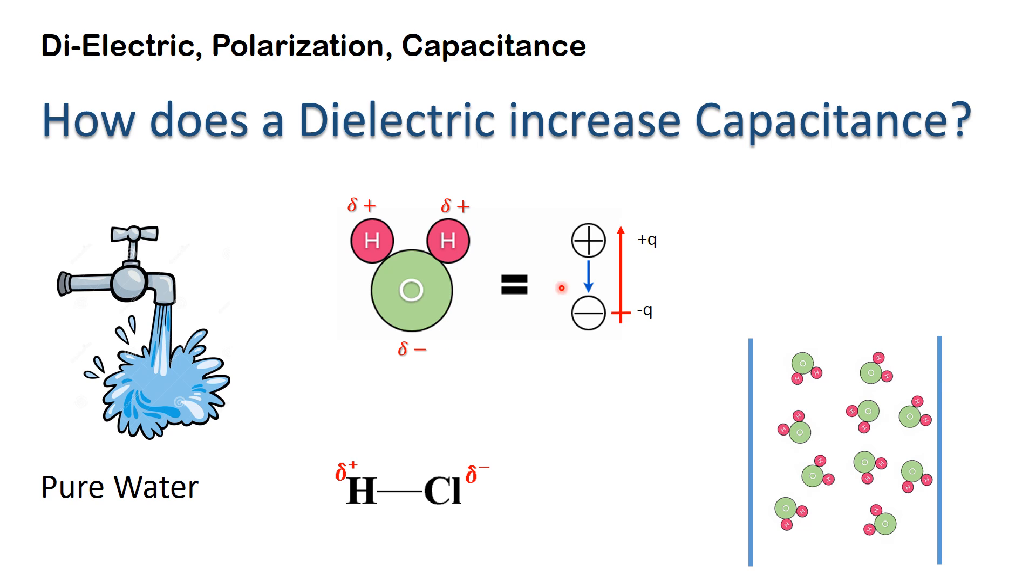This creates a dipole where one end is positive and another end is negative. A similar example is HCl.